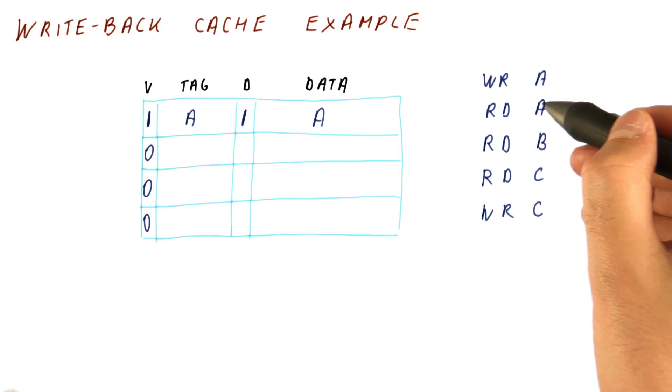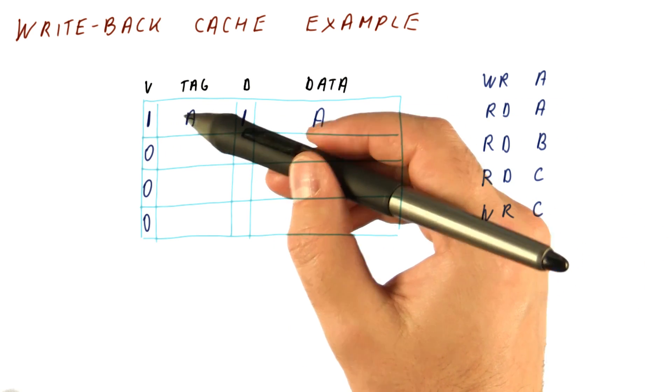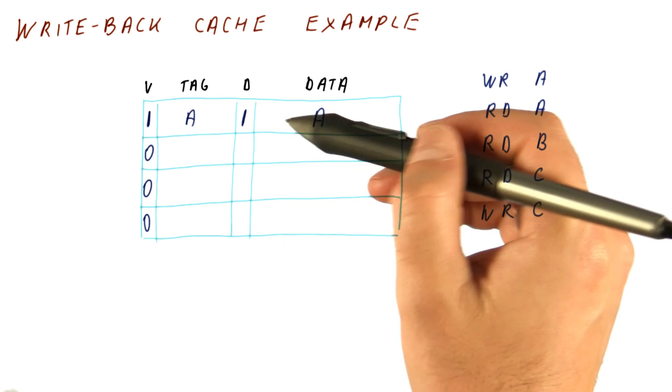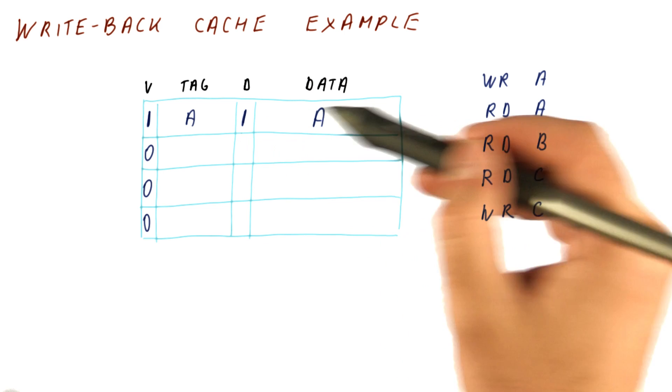Next, we have a read to A. The processor checks the tag and the valid bit, sees that the tag matches A, and the valid bit is 1, so it can just use A. The fact that the dirty bit is 1 doesn't change anything.